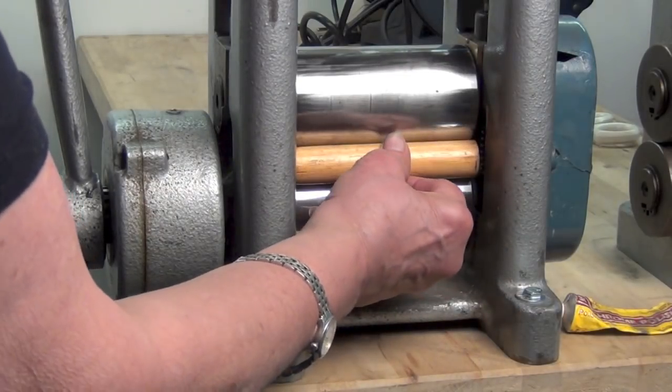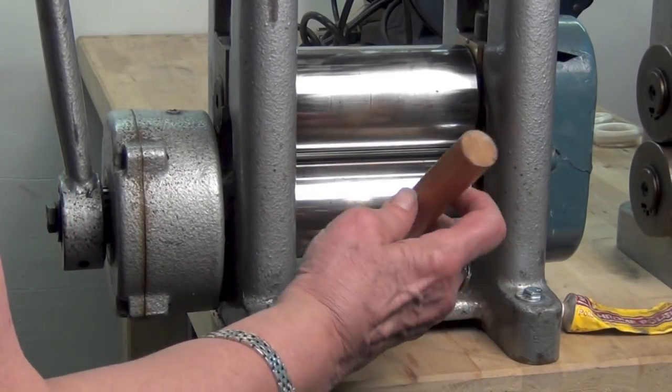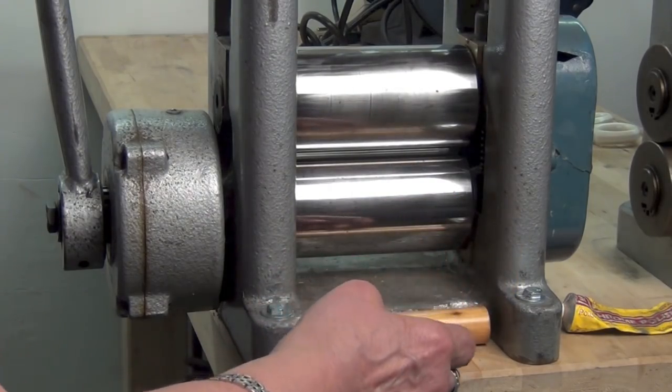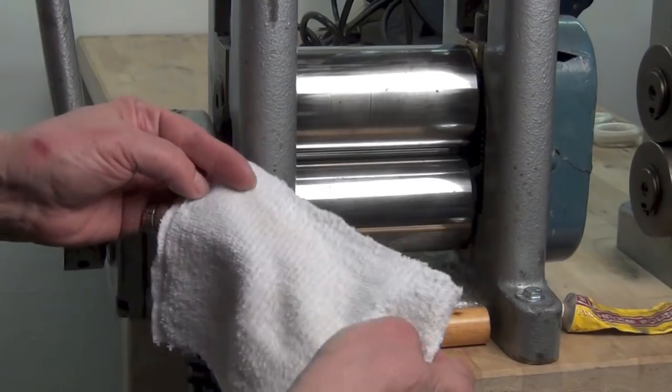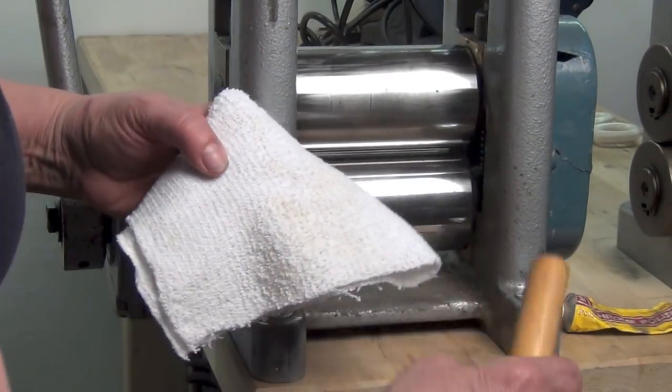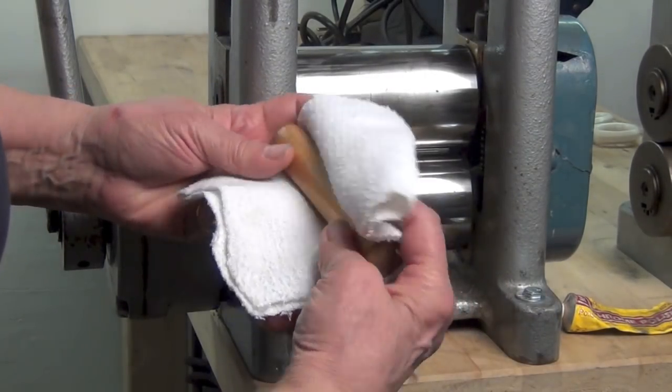To maintain my rolling mill, I've cut a one-inch dowel that is the width of the rollers. I take a piece of cloth and double it up to put between the rollers and polish it.